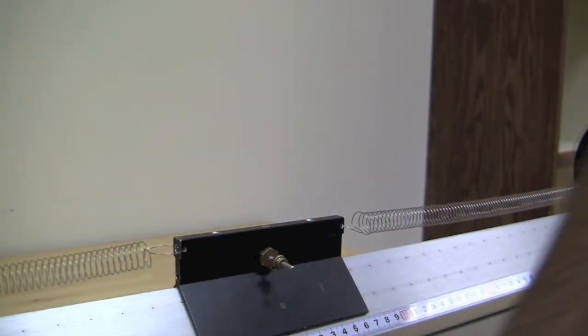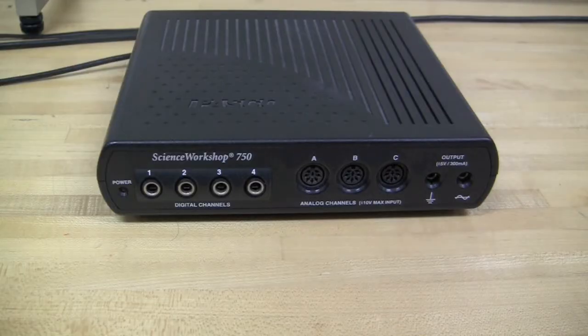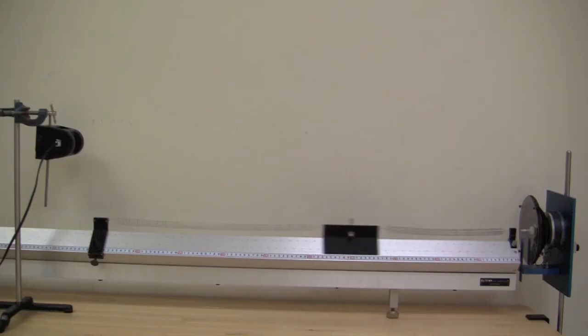For the fourth part, replace the timing plate with aluminum vane. Set up the motion sensor approximately 60 cm from the vane. Connect it to the interface and create an experiment in Data Studio.